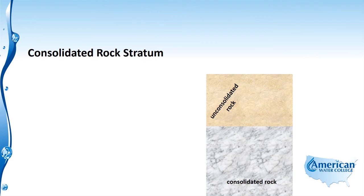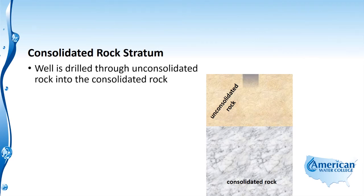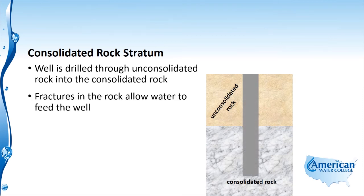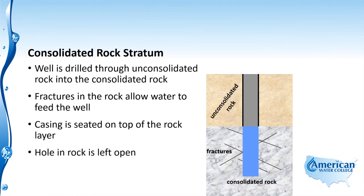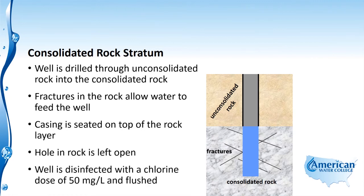When drilling into consolidated rock, the well is drilled through the unconsolidated material into the consolidated rock, and fractures in the rock allow water to feed the well. The casing is placed down and seated on top of the rock layer, and the hole in the rock is left open. The well is then disinfected with a chlorine dose of 50 milligrams per liter and flushed.